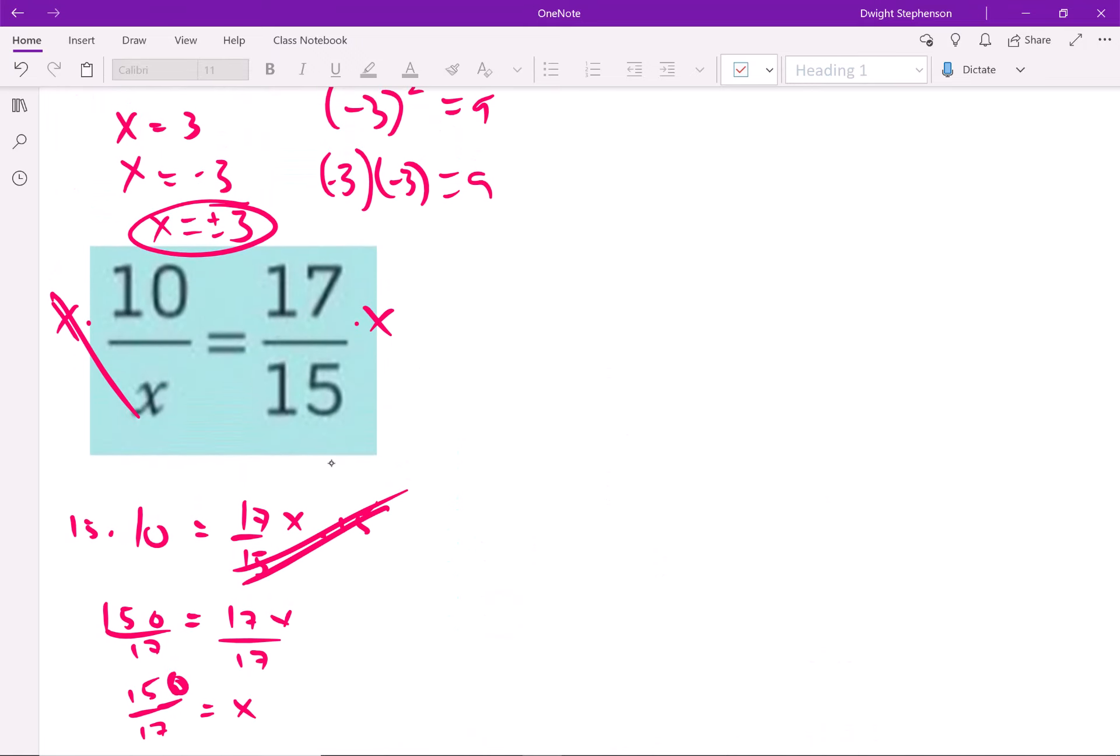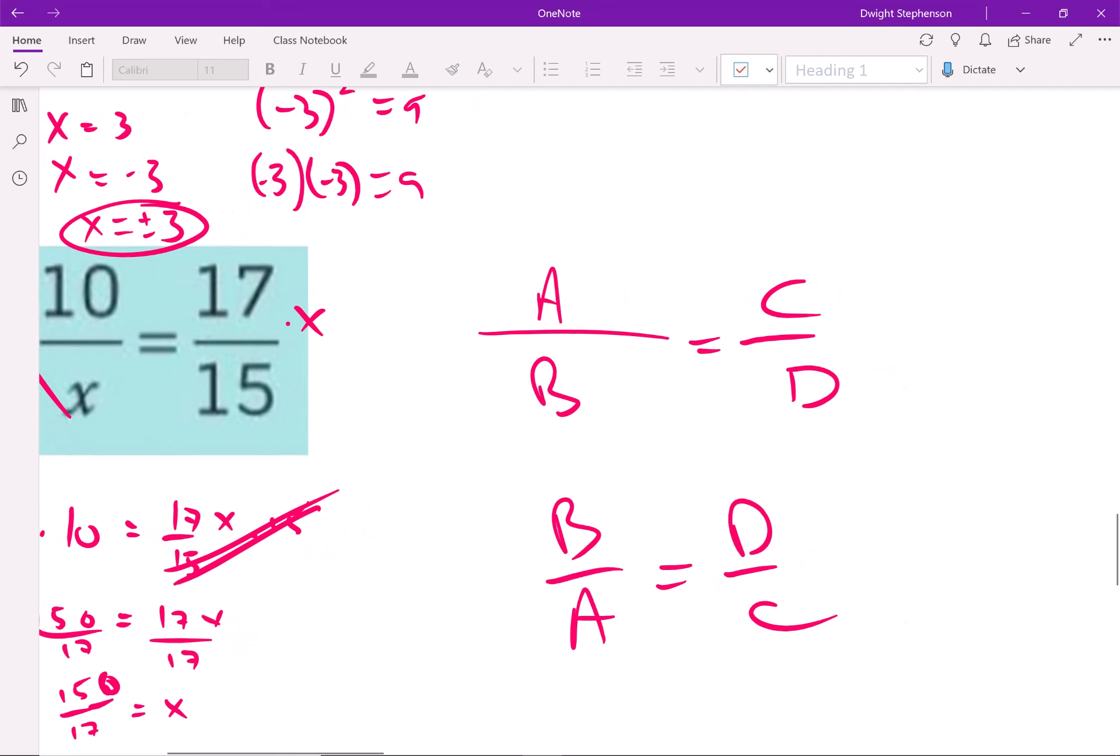Another way to do these proportion problems is if you ever have two fractions that are equal to each other, like a over b equals c over d, it is always true that this will be true as well. So you could actually flip this. So if you can always flip, as long as you flip both sides it works out. So I could actually take this equation we have here and I could write x over 10 equals 15 over 17.